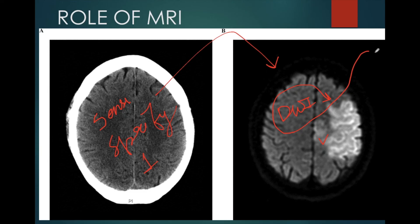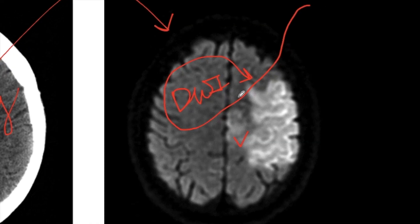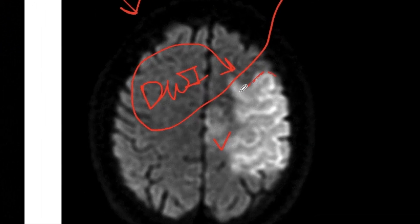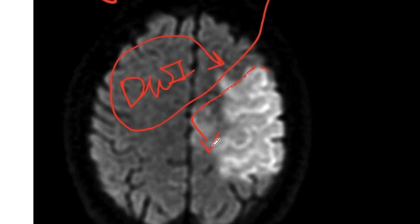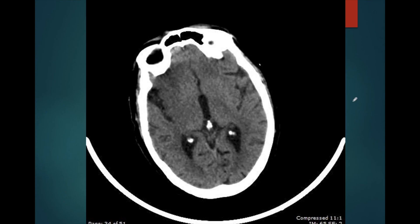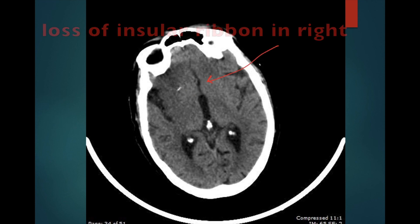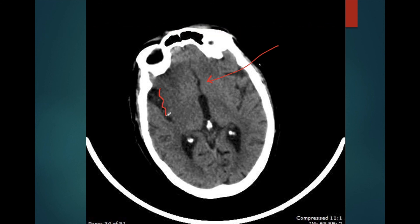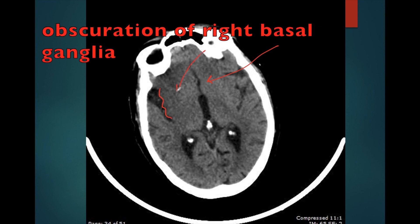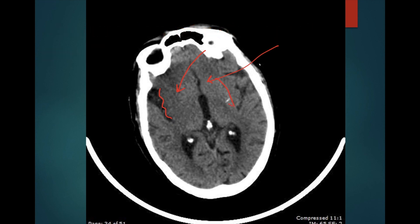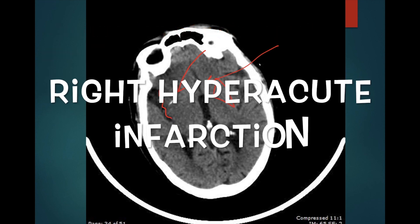Coming back to our original case: on this CT scan, we can see loss of the insular ribbon on the right side with the insular cortex appearing hypodense, and there is also obscuration of the right basal ganglia compared to the left side. So this was a case of right-sided hyperacute infarction. Thank you.